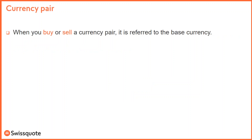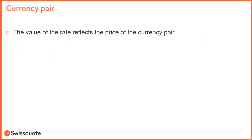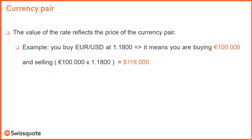When you buy or sell a currency pair, it is referred to the base currency. For example, if you buy 100,000 units of EUR/USD, you are buying 100,000 euros — that's the base currency — and the broker sells for you the equivalent in dollars. It means that the purchase of euros and the sale of dollars is simultaneous.